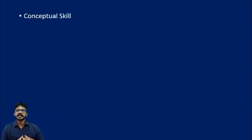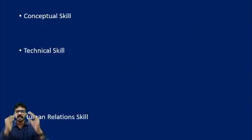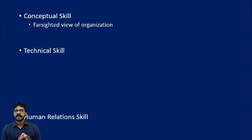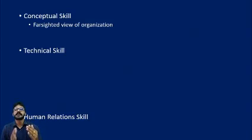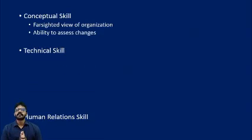Now we discuss the skills different levels of managers should have. The first type is conceptual skill, the second is technical skill, and the third is human relations skill. In conceptual skill, the manager should have a farsighted view of the organization — understanding what it is going to achieve in upcoming years, how it will be achieved, whether it can be achieved, and what problems may be faced.